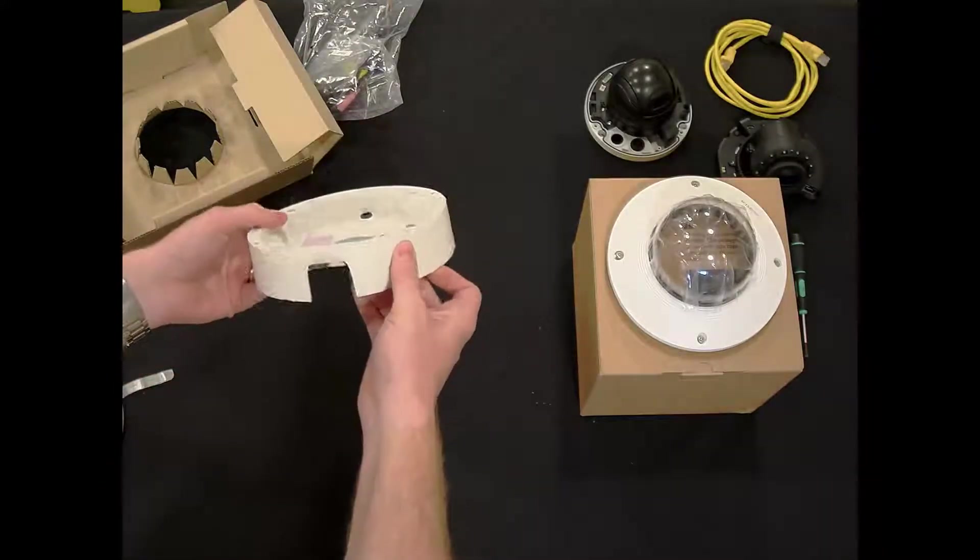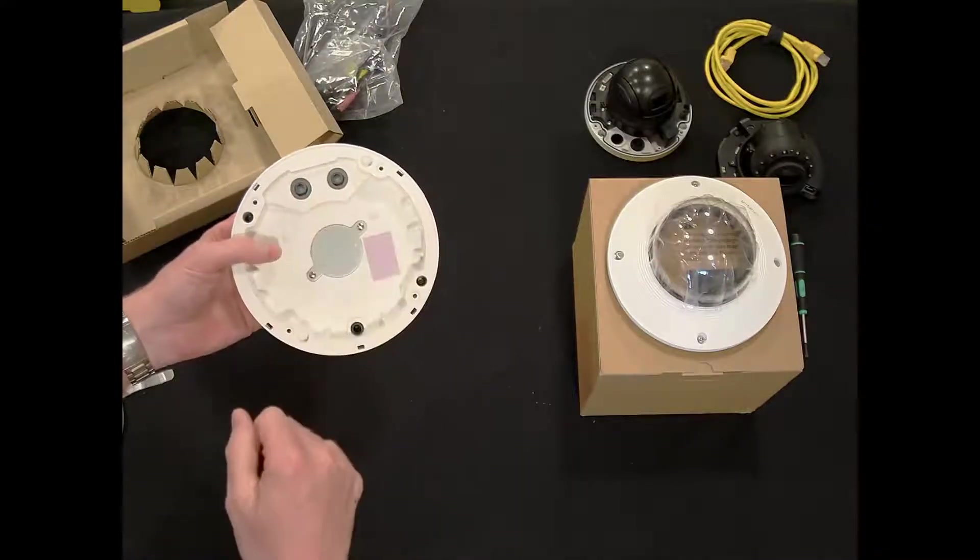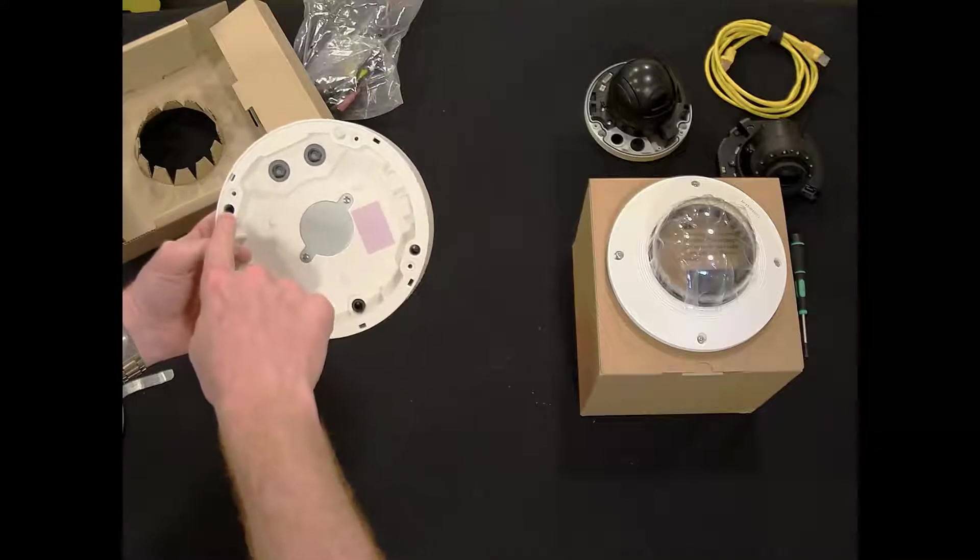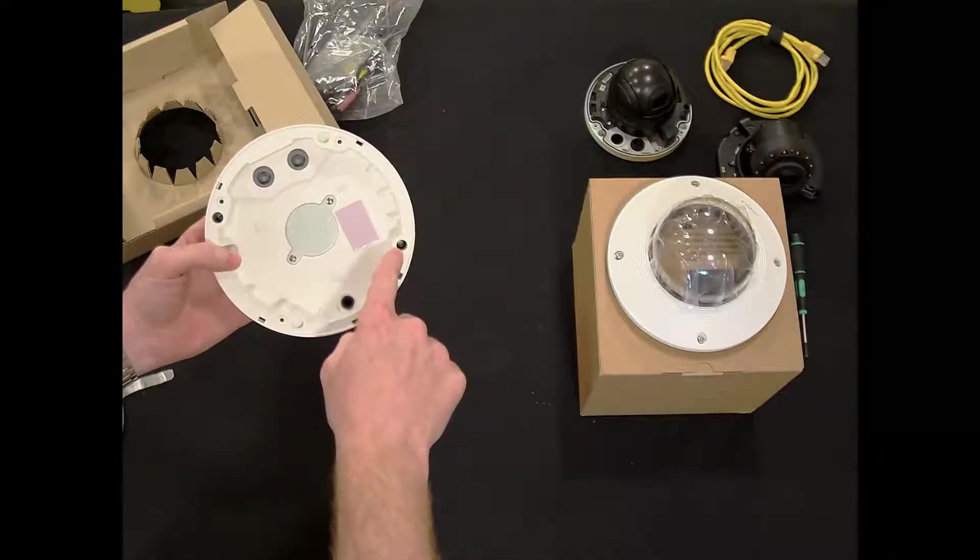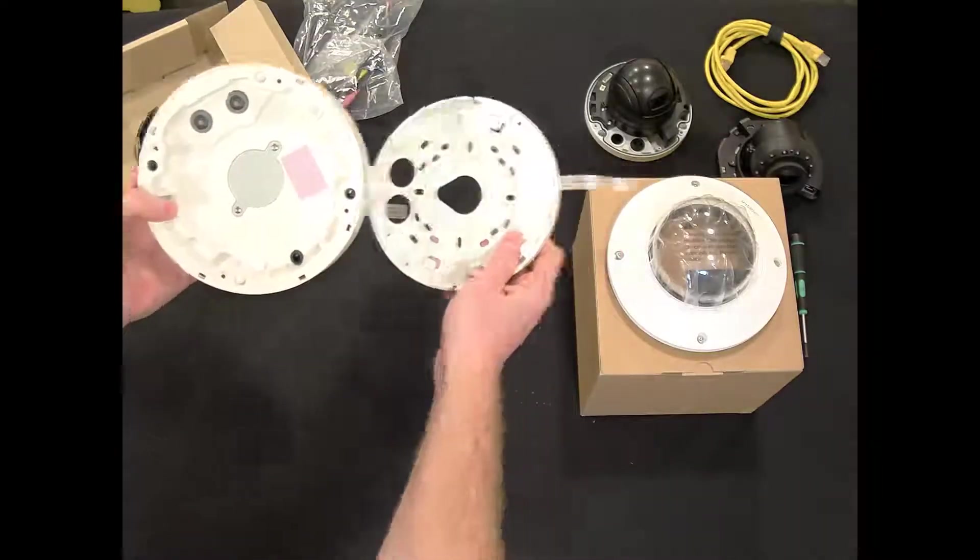We have the camera case here. You'll see we have our grommets for our cable entry. We have two screws here that attach the plate, attach this plate to the case.